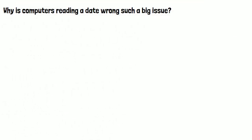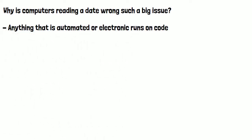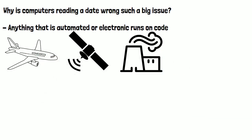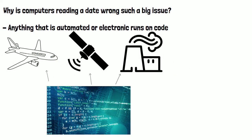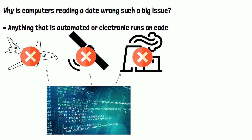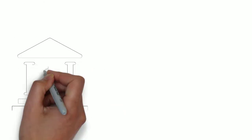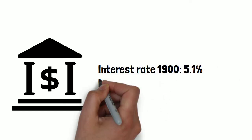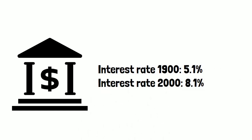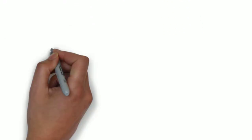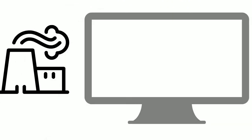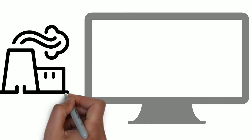So why is computers reading a date wrong such a big issue? Pretty much anything that is automated or electronic runs on code. Things like planes, satellites, and power stations rely heavily on software and code. Computers not being able to read the date correctly would cause them to error or the software to crash completely. Banks using computers to calculate interest rates would calculate the rate for a hundred years ago rather than today's rates. Power stations that relied on the date for scheduled automated checks such as power input and radiation levels would be in big trouble.